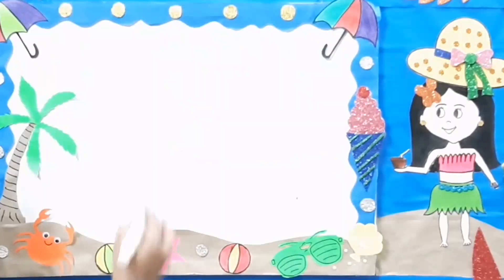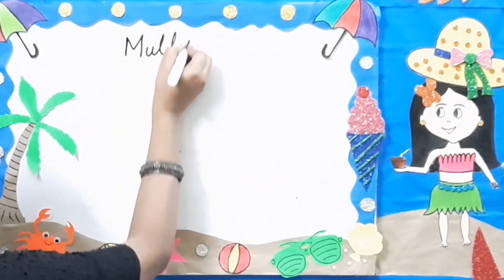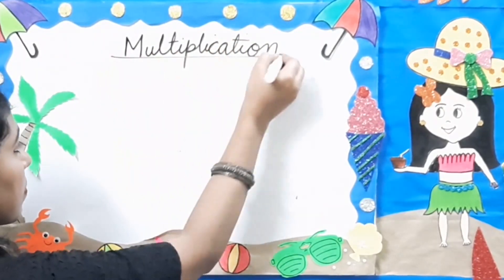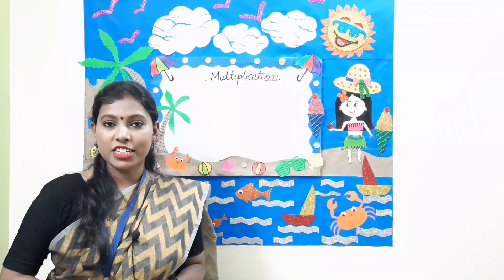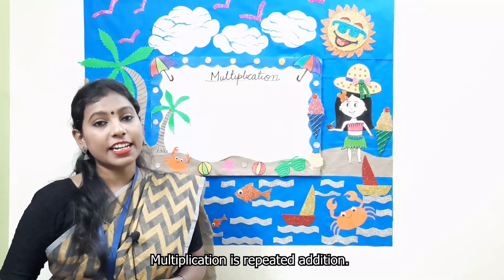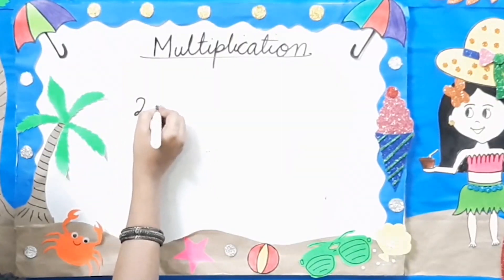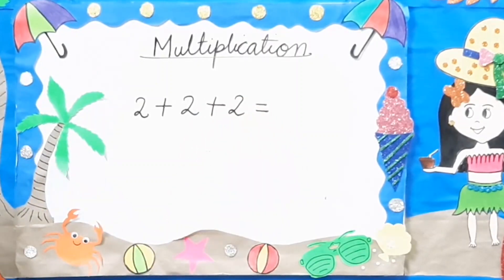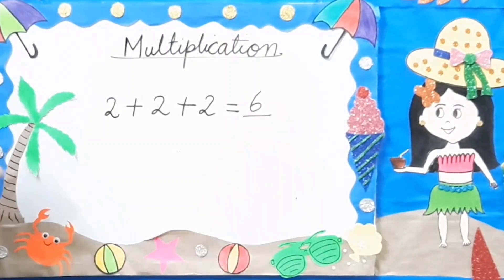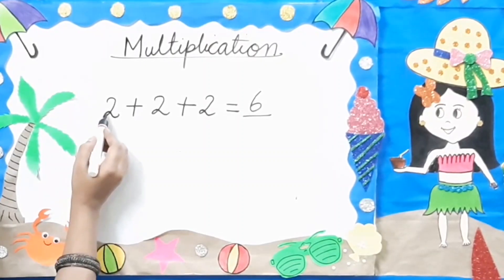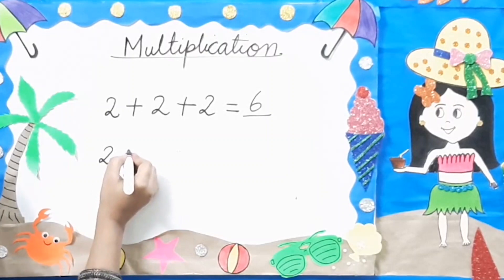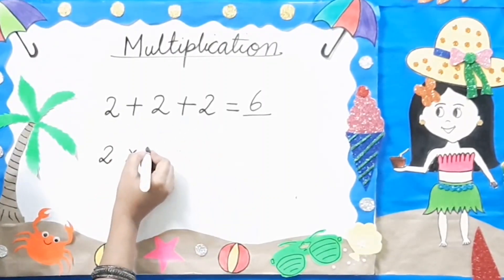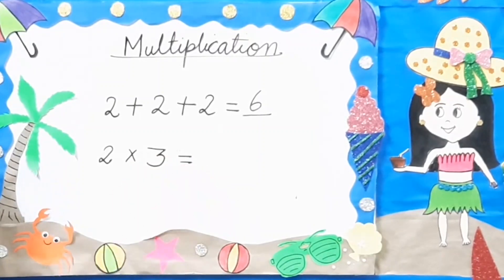Our next topic is Multiplication. What is Multiplication? Multiplication is Repeated Addition. For example, 2 plus 2 plus 2 is equal to 6. You will write down the number 2, and count how many times you have written 2 — that is 1, 2, and 3. So 2 into 3: 2 threes are 6.